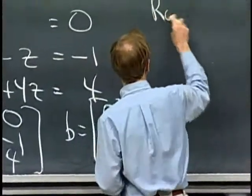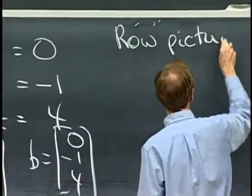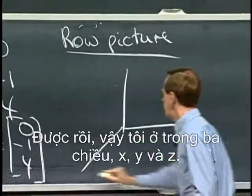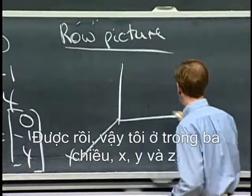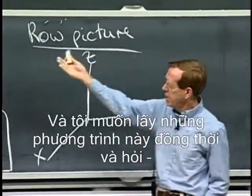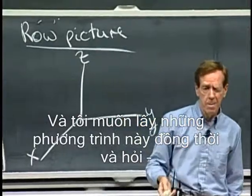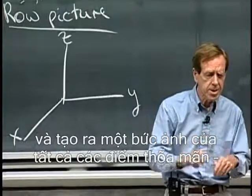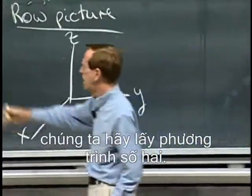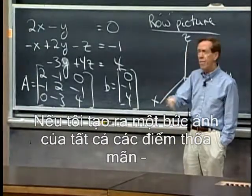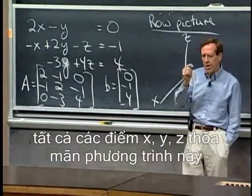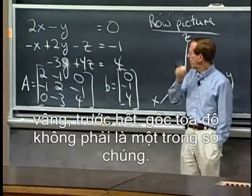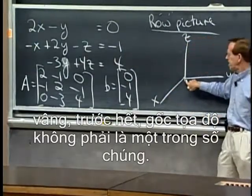So the row picture. All right, so I'm in three dimensions, x, y, and z, and I want to take those equations one at a time and ask, and make a picture of all the points that satisfy, let's take equation number two. If I make a picture of all the points that satisfy all the x, y, z points that solve this equation, well, first of all, the origin is not one of them.